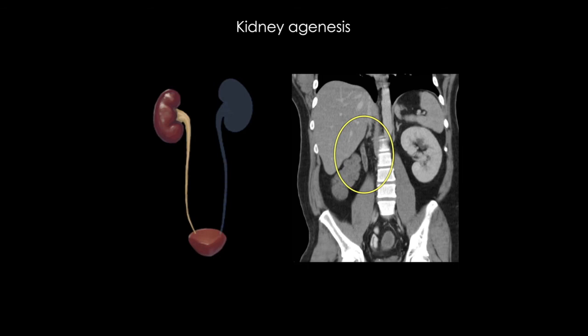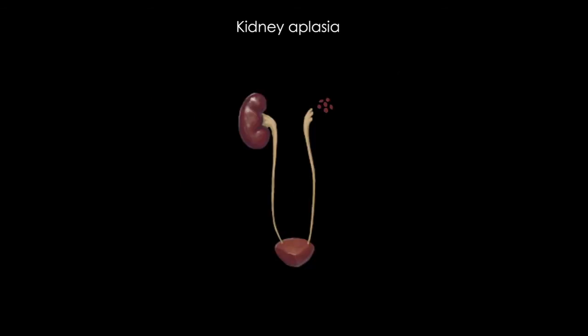The job of the fetal kidneys is to produce urine, and that makes up most of the amniotic fluid. Insufficient amniotic fluid, called oligohydramnios, can be caused by kidney agenesis, and this can cause lung hypoplasia and other abnormalities. In aplasia, here you can see some development of kidney parenchyma and ureter structure, but this kidney is not functional. It's actually hard to tell the difference between renal agenesis and aplasia during the newborn period, and so most of these get classified as agenesis by default.